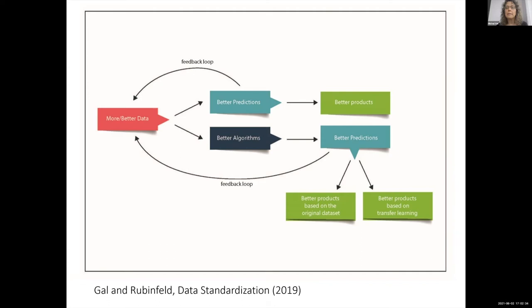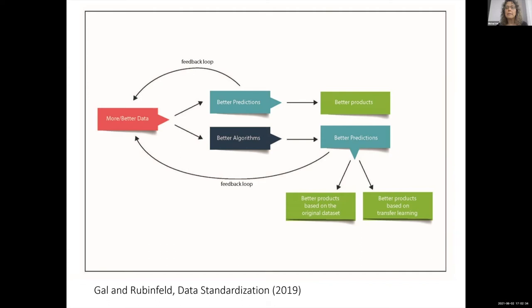The starting point for our analysis is that data is important for the digital economy. We can think about more and better data affecting the quality of products. But there's also a feedback loop here, where more and better data transfers into better algorithms, which can then translate into better products or services. So if firms need data for their operations, how do they get this data?